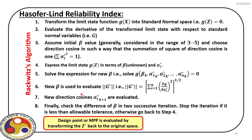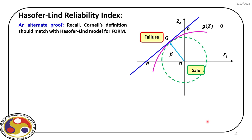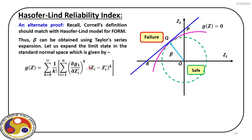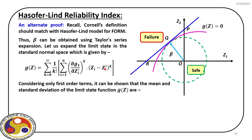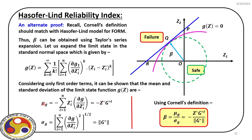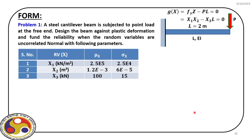Once we find the optimal point in the z space, we can transform it back to the original space, since we must design in the original space. Because we use only first-order terms in this process, we call it the first order reliability method (FORM). There is an alternate proof: expanding gz in a Taylor series gives mu_g and sigma_g in matrix notation, and taking the ratio yields the same expression for beta.